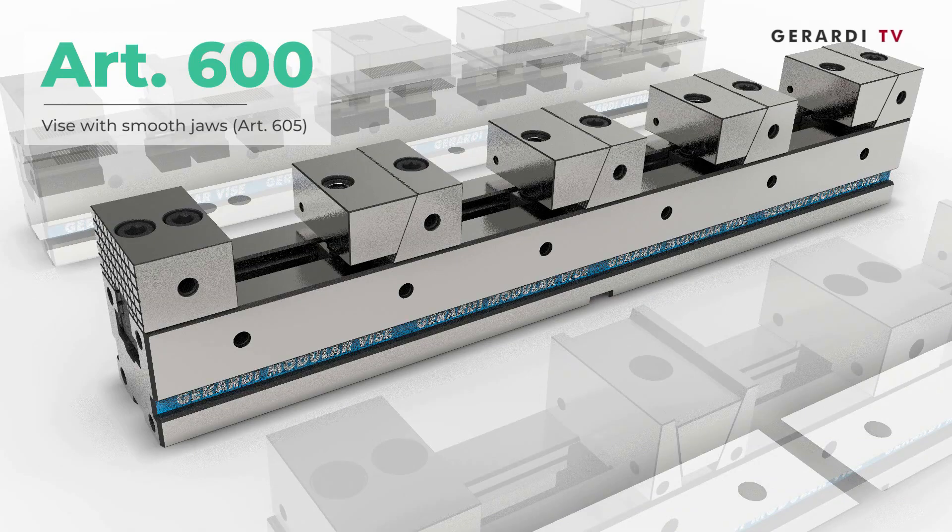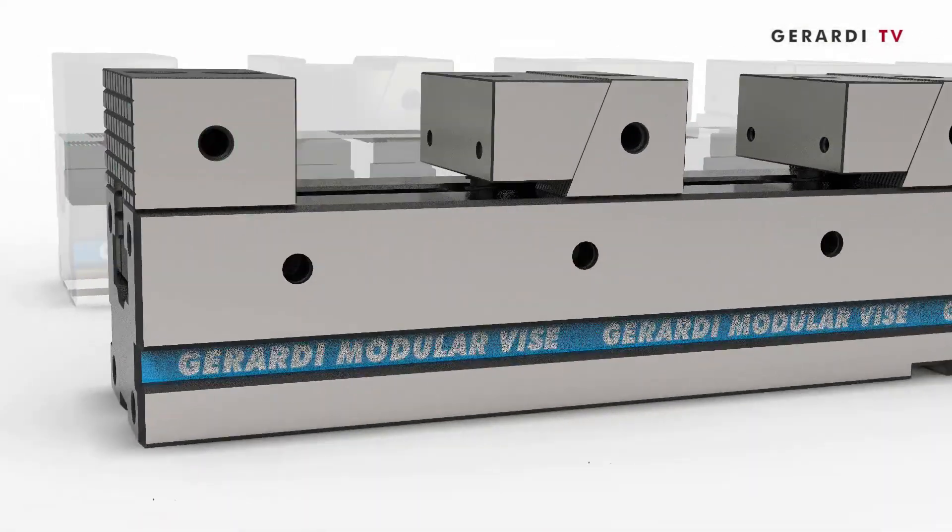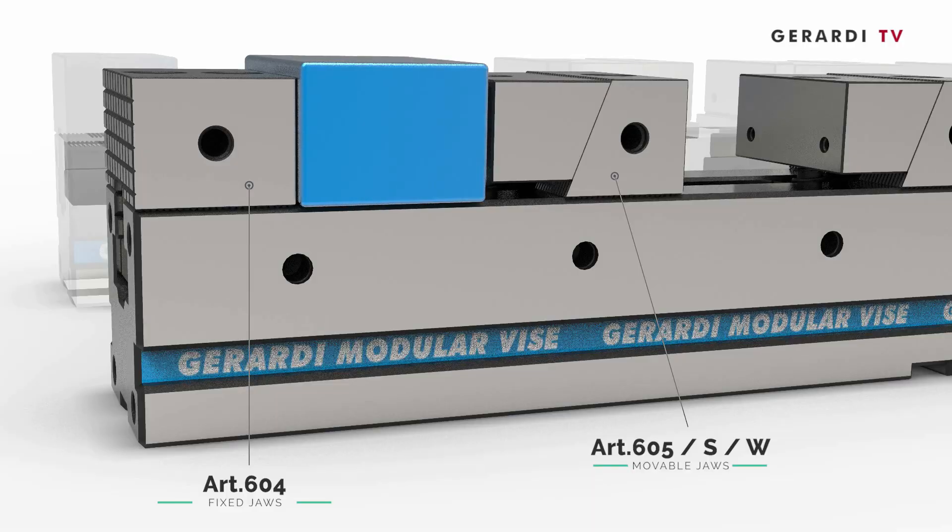Article 600 with smooth jaws, for workpieces clamped directly on vise base.